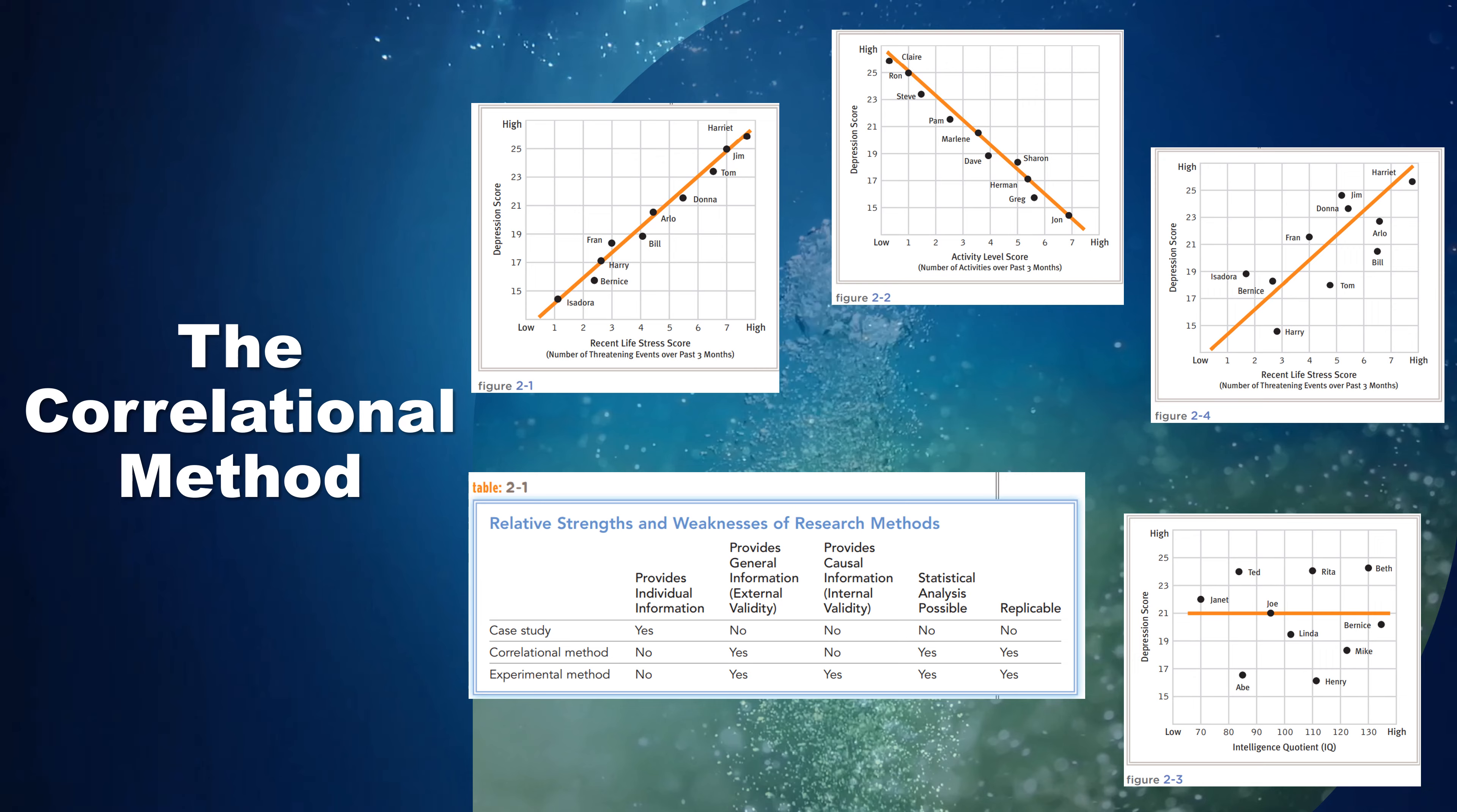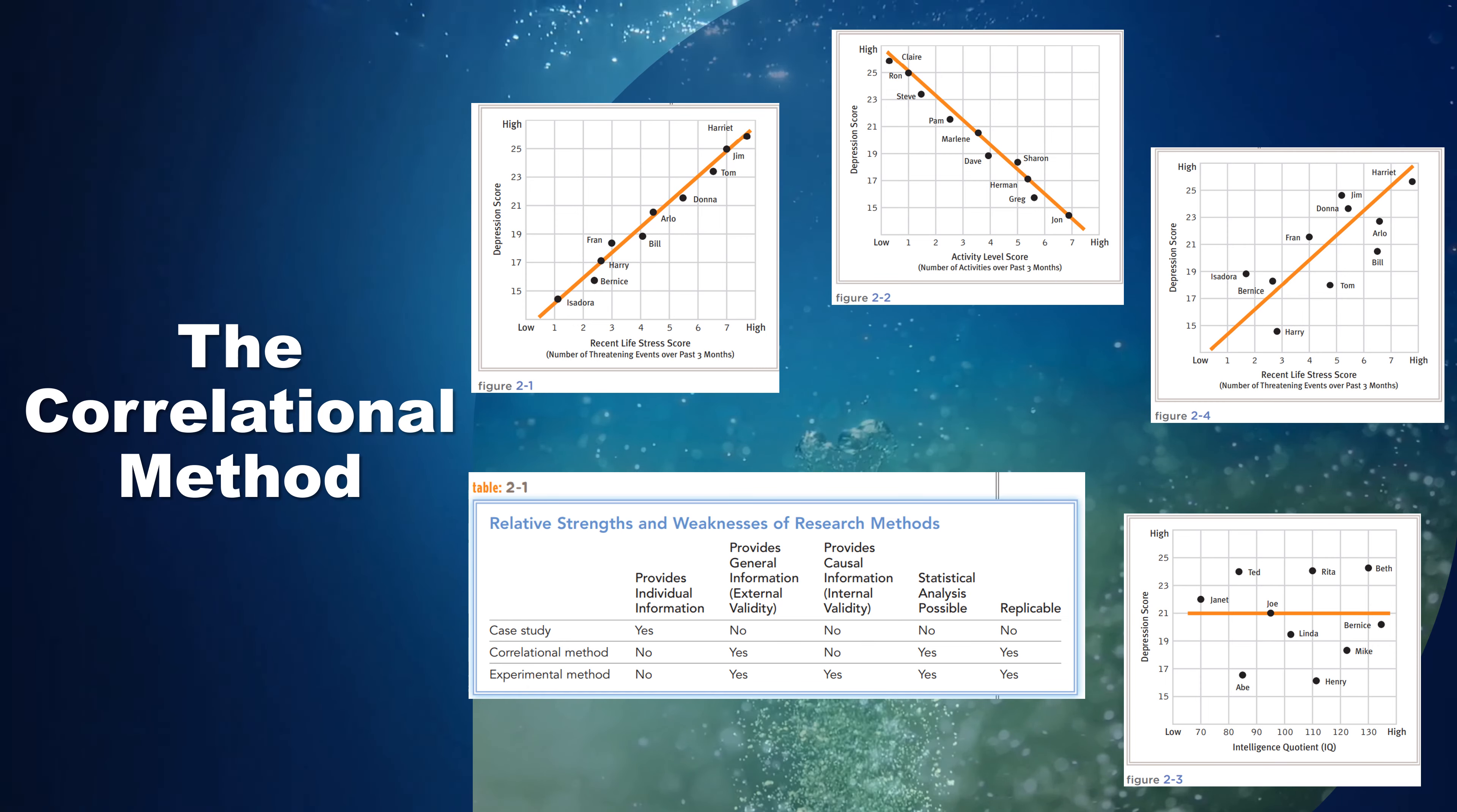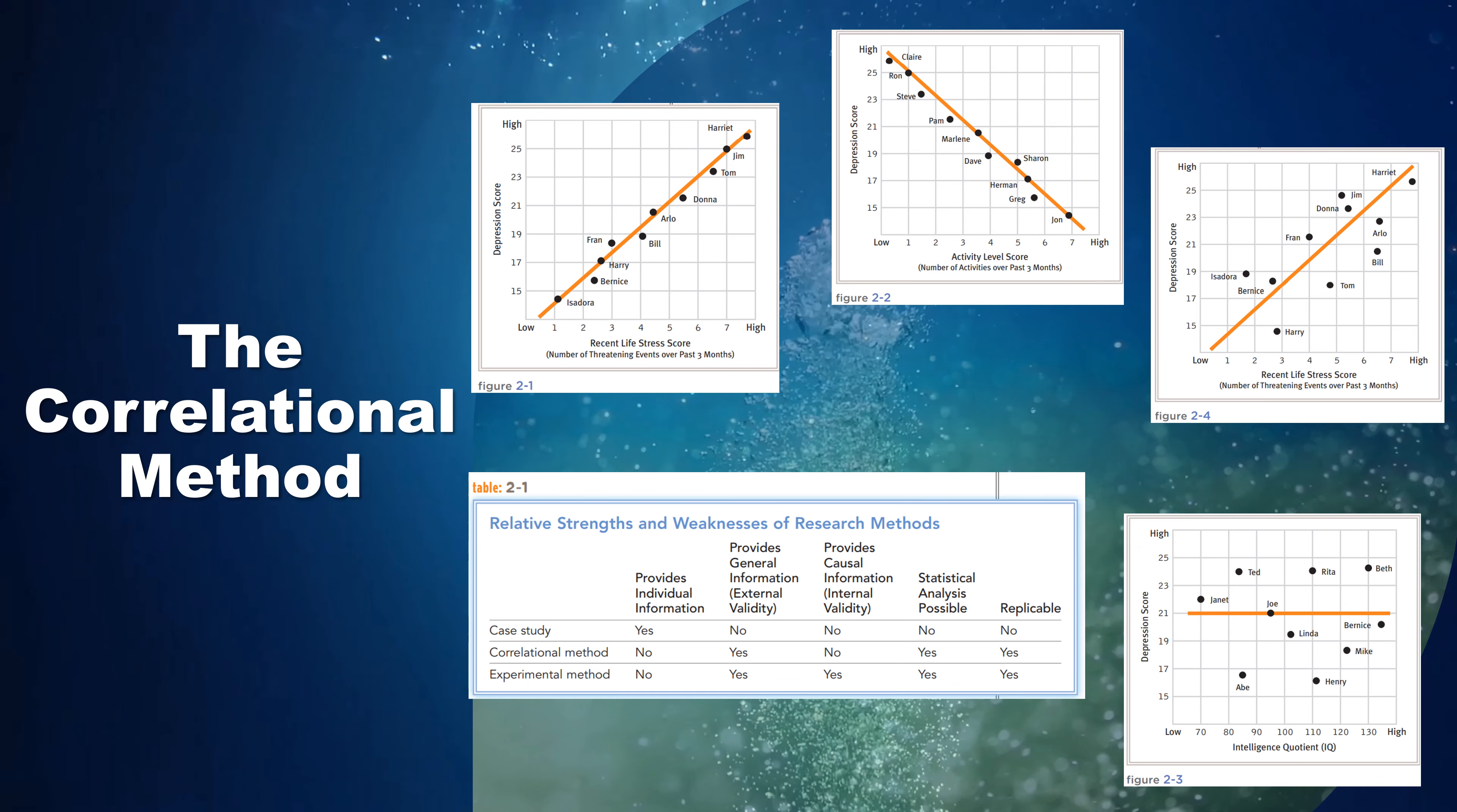The line of best fit in Figure 2-1 slopes upward and to the right, indicating that the variables under examination are increasing or decreasing together. That is, the greater someone's life stress score, the higher his or her score on the depression scale. When variables change the same way, their correlation is said to have a positive direction and is referred to as a positive correlation. Most studies of life stress and depression have indeed found a positive correlation between those two variables.